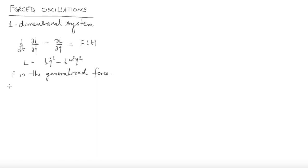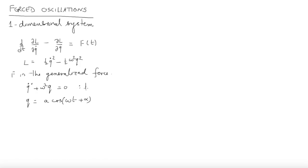If f equals zero it vanishes, then you have a free system, and the solution to the free case you already know: q equals a cos(ωt + α). The equation of motion in this case is q̈ + ω²q = 0, and remember this is a homogeneous equation.